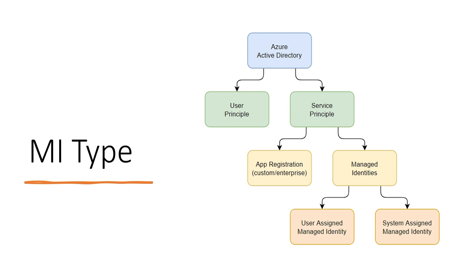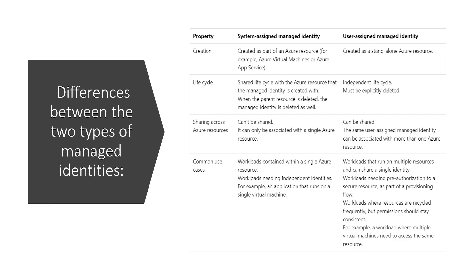Let's talk about managed identity types. Azure Active Directory has UPNs and service principals. Within service principals, you can use normal app registration with secret or certificate-based authentication, or when you enable managed identity for any resource, it creates an enterprise application inside Azure Active Directory — that is also a kind of service principal managed by Azure itself. Managed identity comes in two types: system-assigned managed identity and user-assigned managed identity.